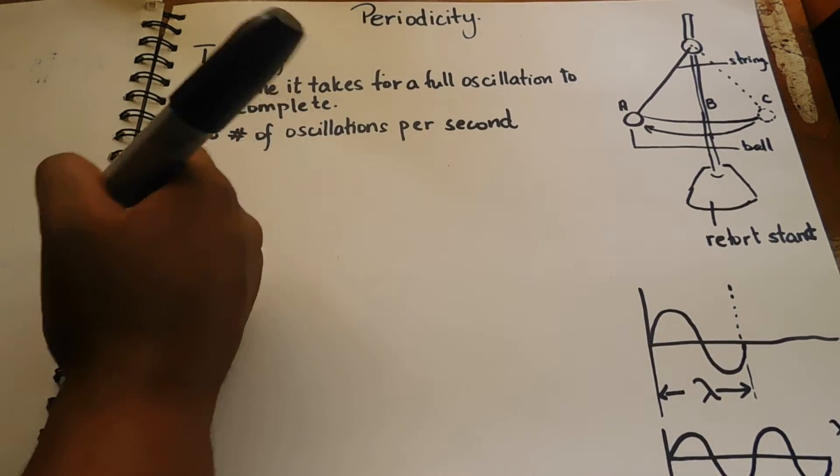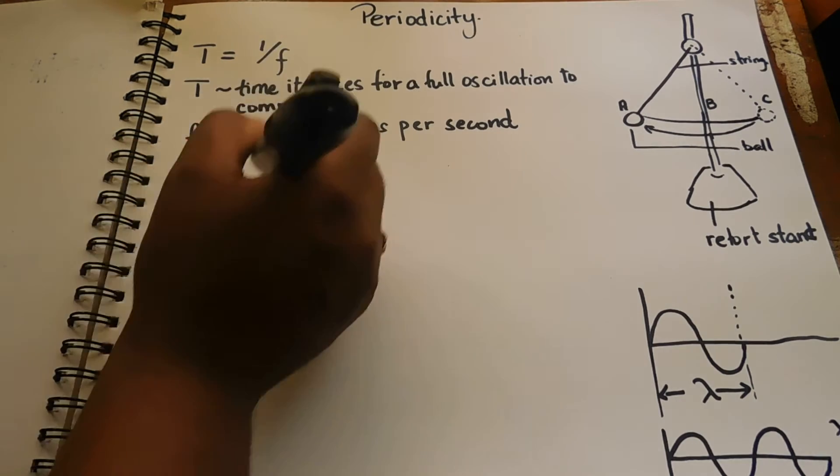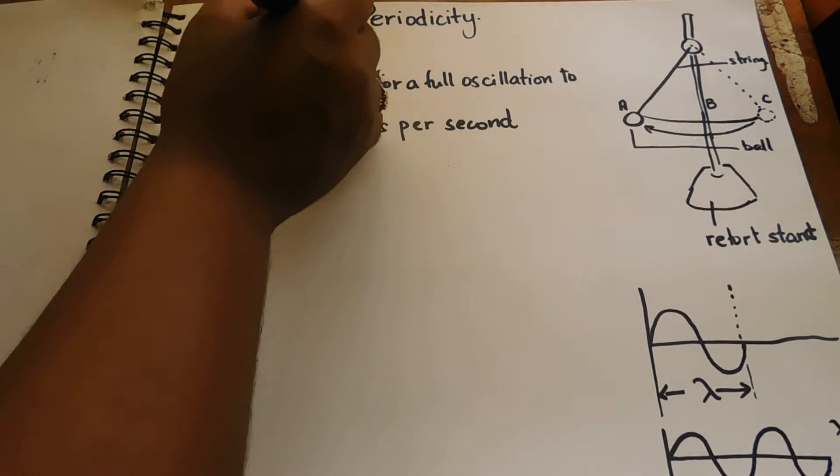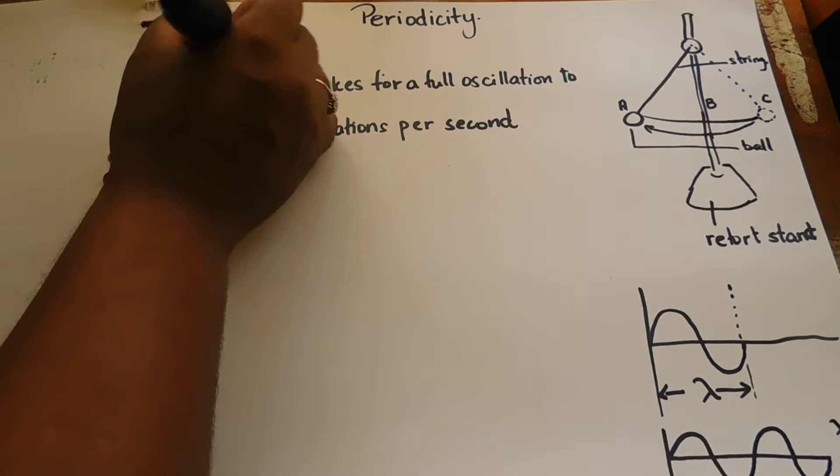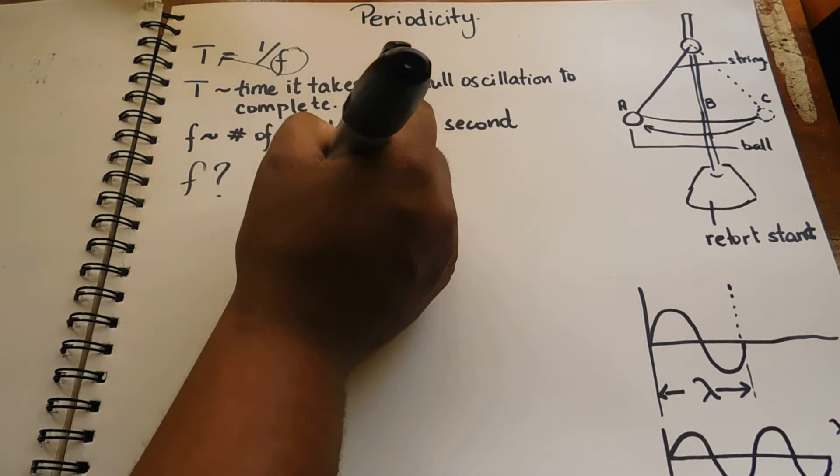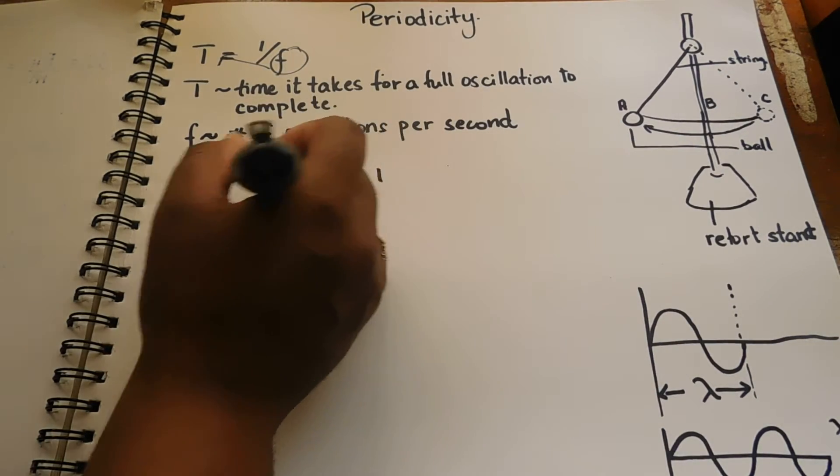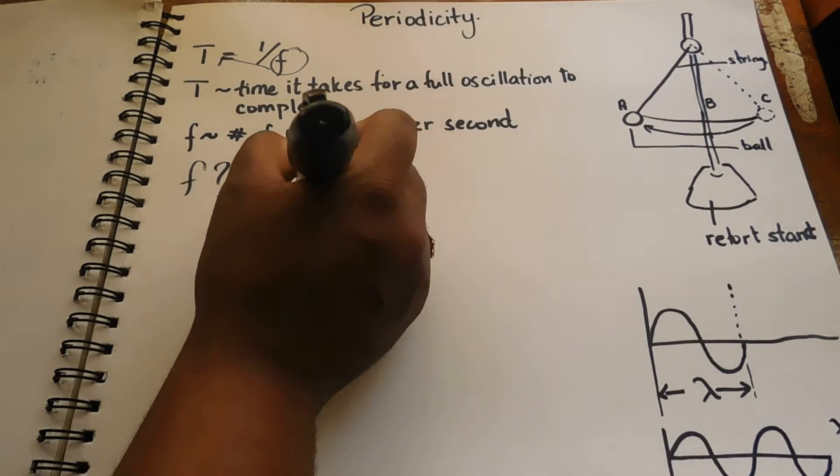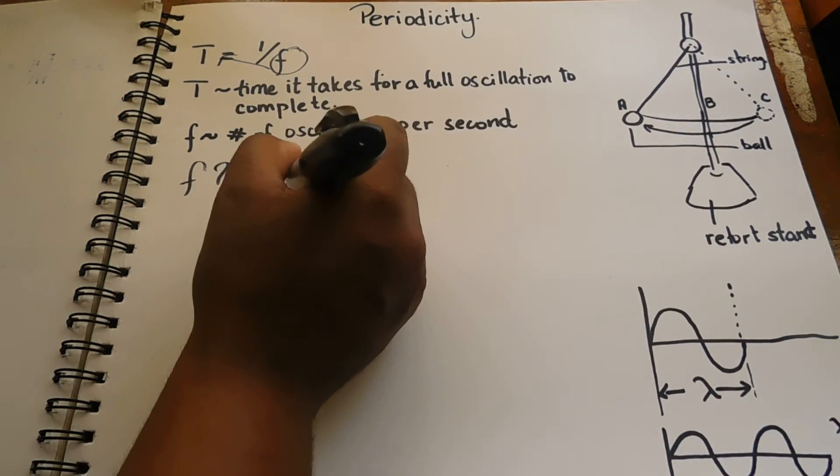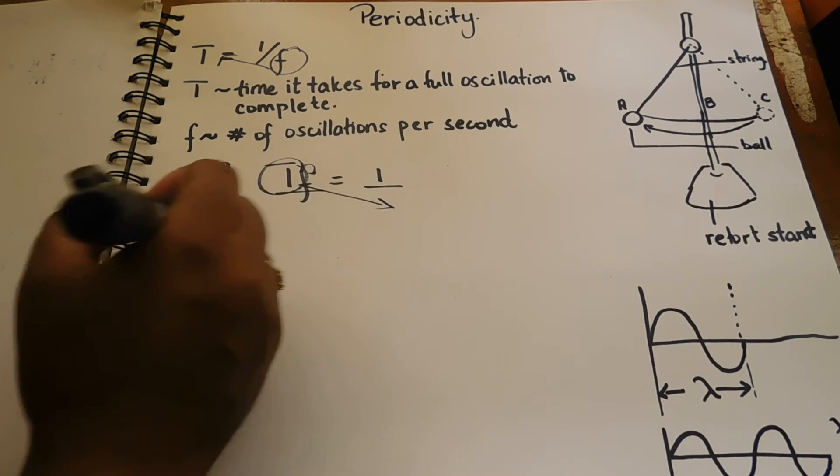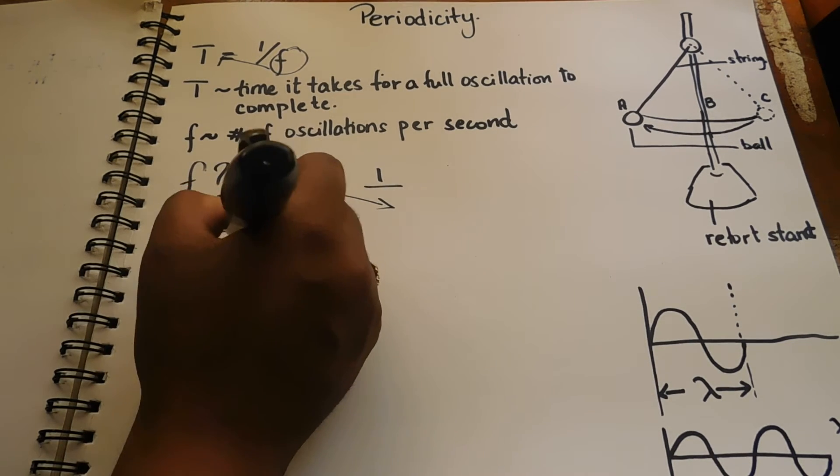So if you want to determine f frequency, what would you do? We'll move the f up, so you get T·f equals one. Then you transpose because you want f by itself, so you remove T. We end up with f is equal to one over T.